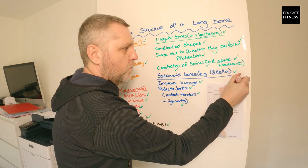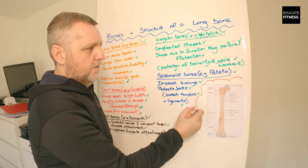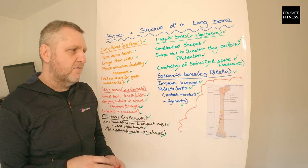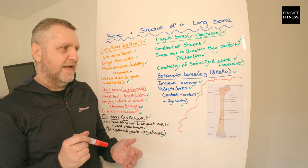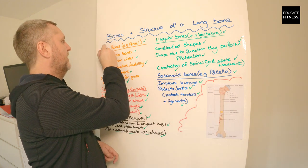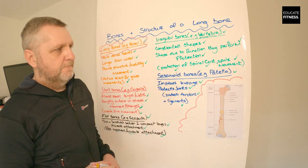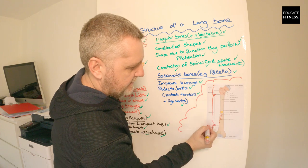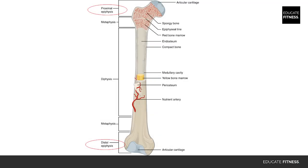Before we finish, let's go through the structure of a long bone — something you'll need to understand for your level 2 anatomy and physiology exam. The long bone is mainly split into three parts. We have the epiphysis, which are the ends of the bone, and then we have the shaft, which is the diaphysis. Let's run through this structure in a little more detail.